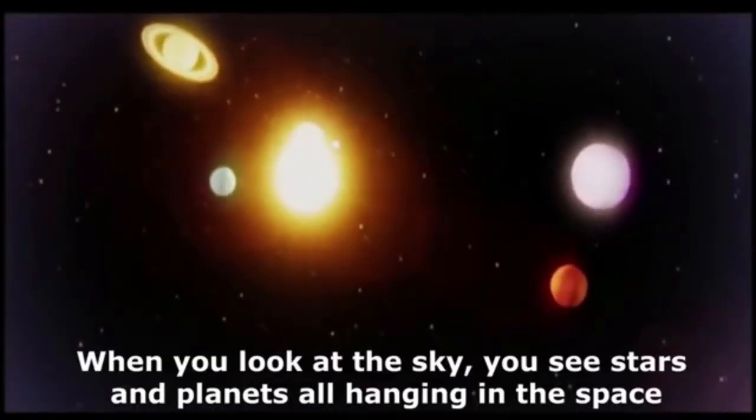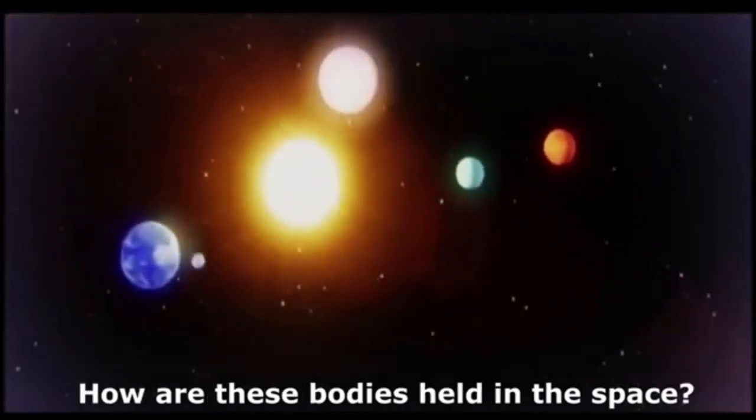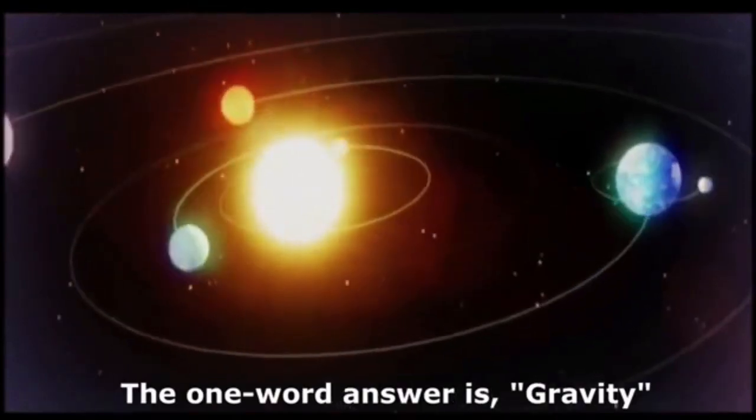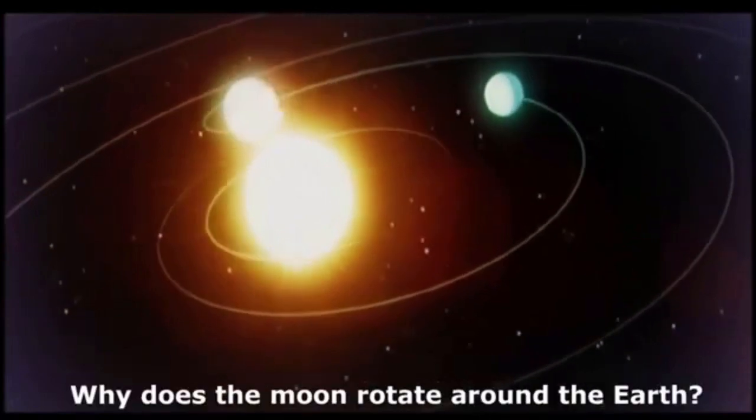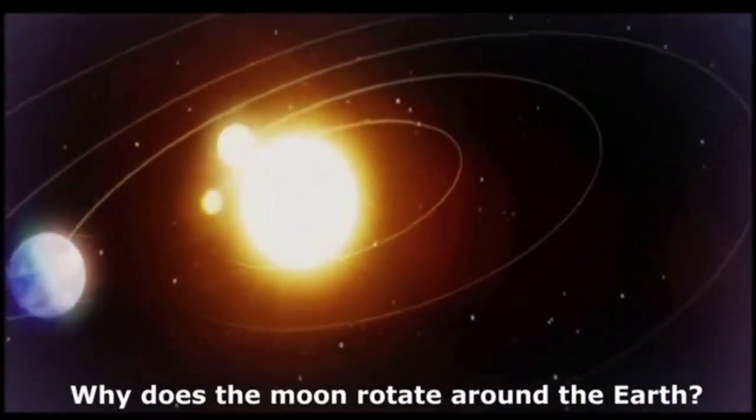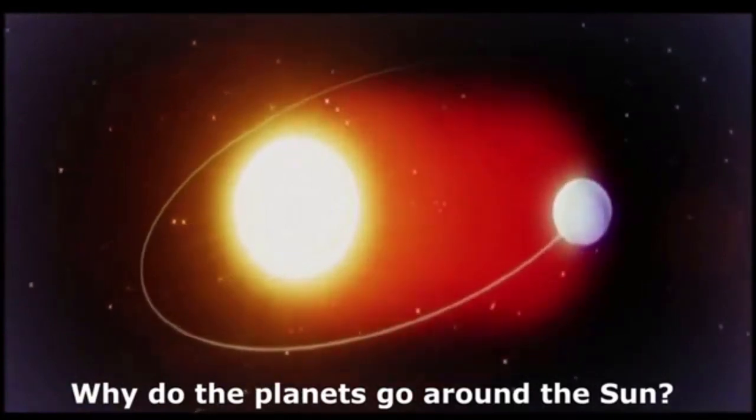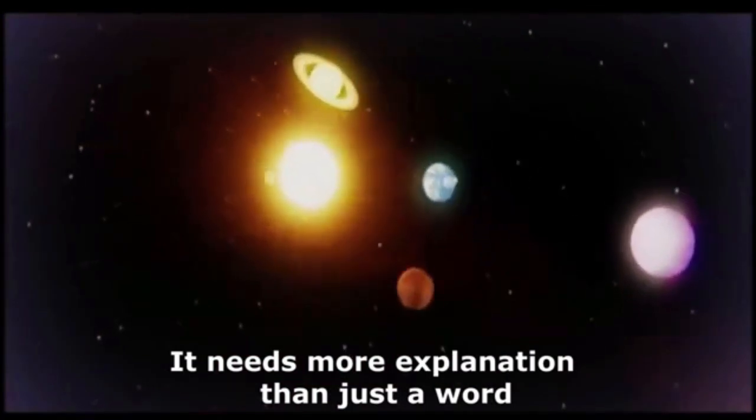When you look at the sky, you can see stars and planets all hanging in space. How are these bodies held in space? The one word answer is gravity, but how does it work? Why does the moon rotate around the earth? Why do the planets go around the sun? It needs more explanation than just a word.